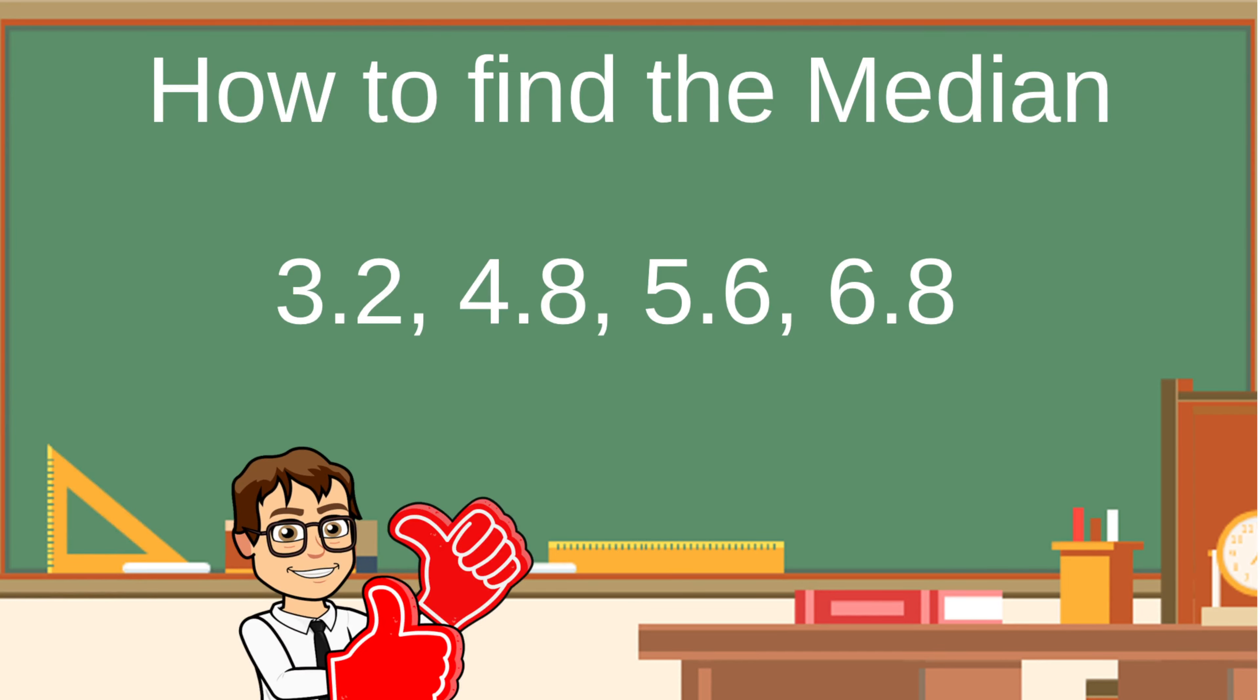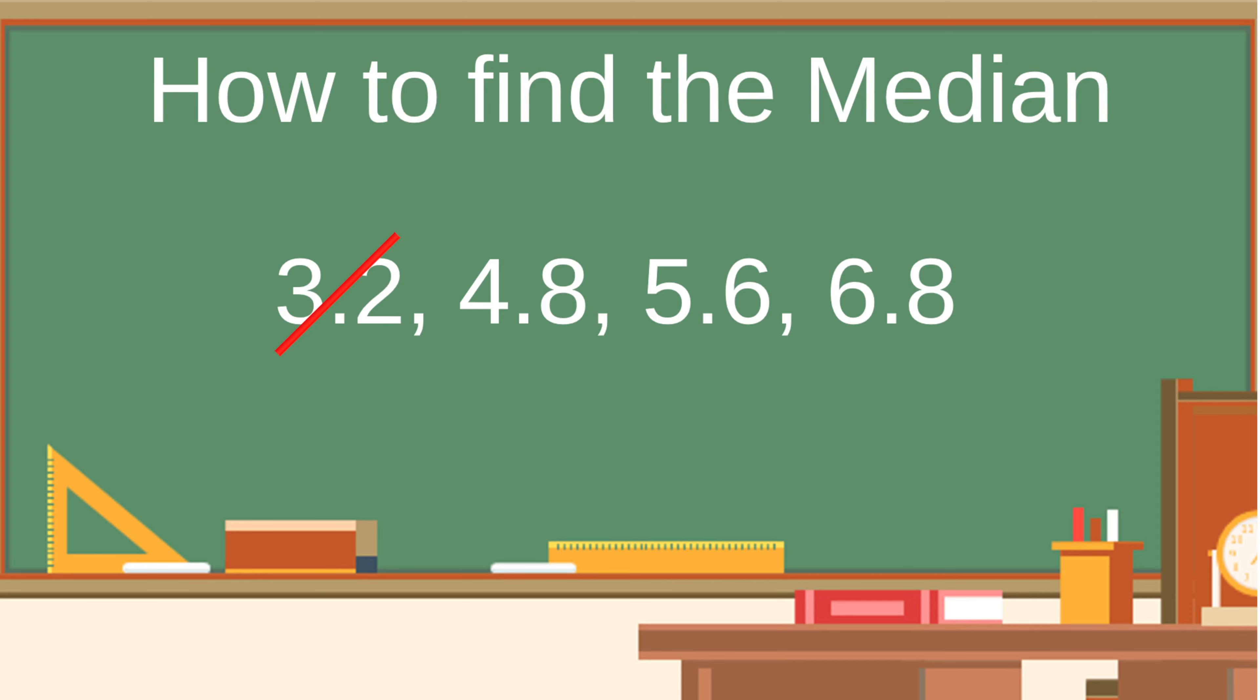Much better. Let's continue. We cross out one number from the left and one number from the right. But wait! Something's different here. If we remove one number from the left and another from the right here, there won't be any numbers in the middle. It looks like we can't do that.